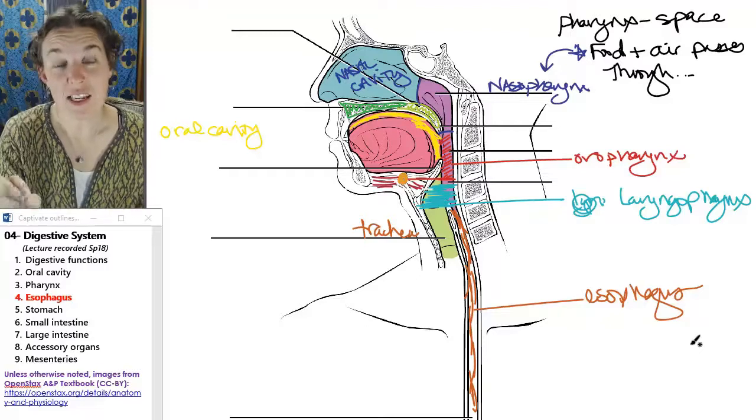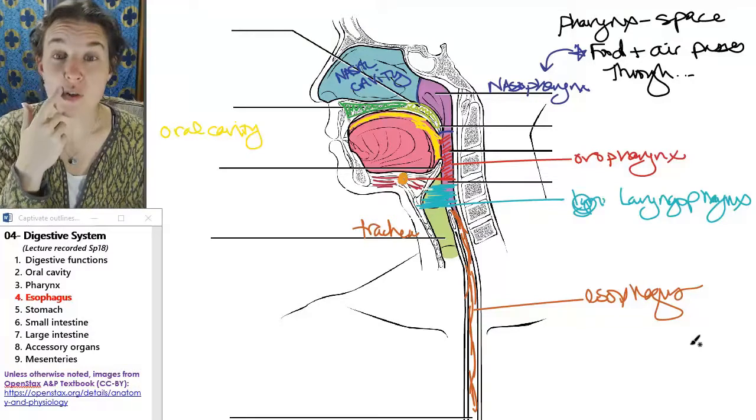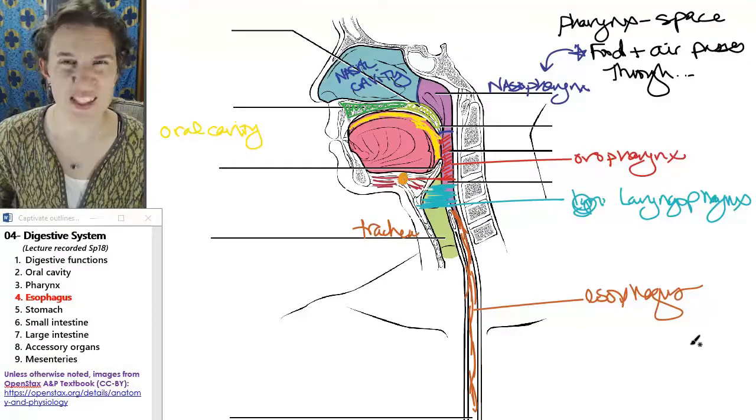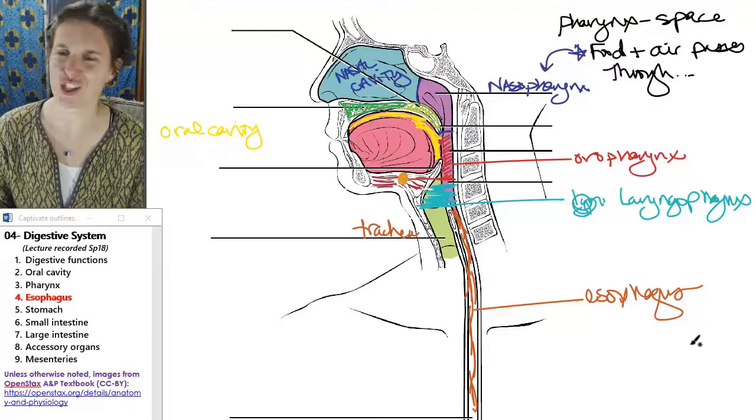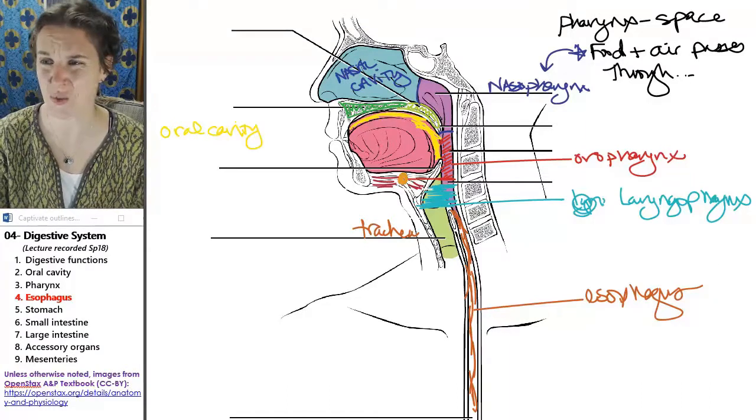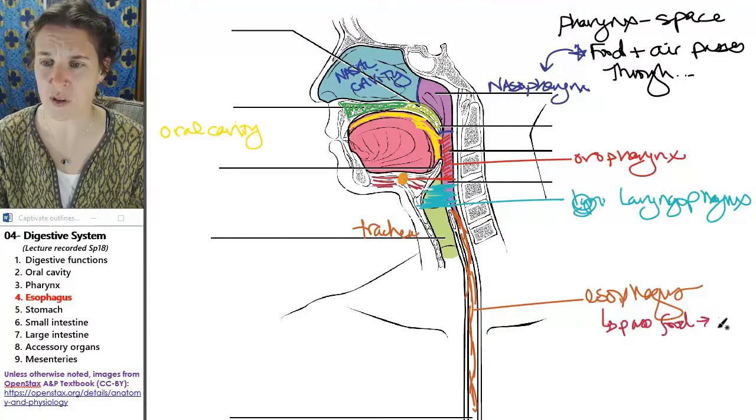The esophagus is the tube that allows food to pass from the pharynx into the stomach. So the majority of the job of the esophagus is just to allow the passage of food. Pass food to stomach.